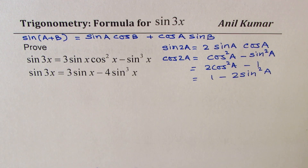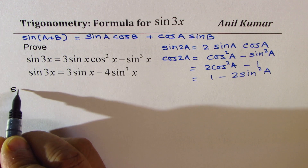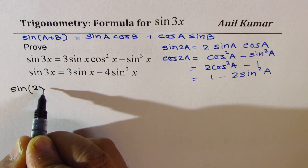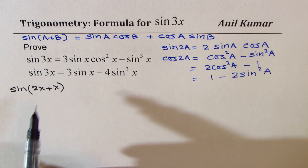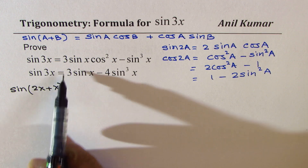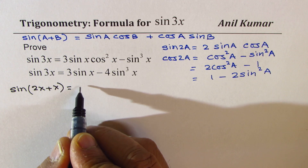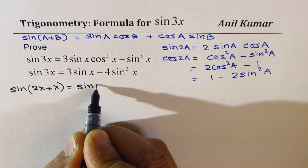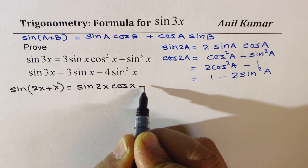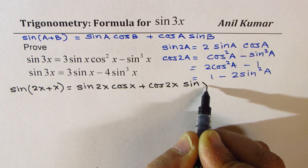When we say sine 3x, then sine 3x could be written as sine of 2x plus x. So I'm writing 3x as sine of 2x plus x, and now I'll apply the compound angle formula, which gives us sine 2x cos x plus cos 2x sine x.